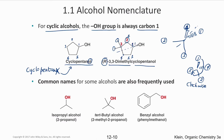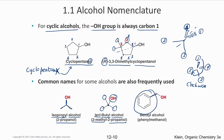Common names include isopropyl alcohol (2-propanol) — a propane structure with OH on the second carbon, the 'iso' indicating it divides into two equal parts. Tert-butyl alcohol (2-methyl-2-propanol) has a tertiary carbon with three side chains and no hydrogens. Benzyl alcohol is a benzene ring attached to a carbon bearing an OH group.